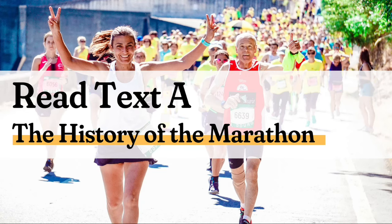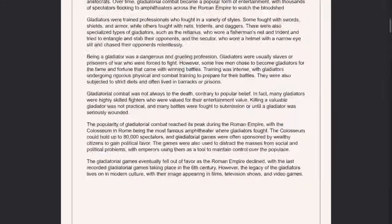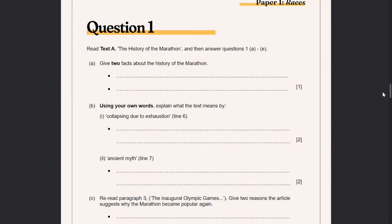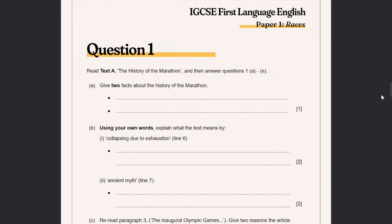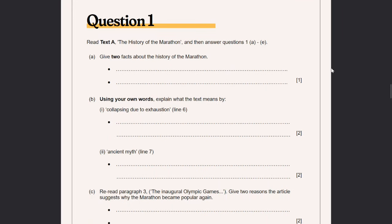Now we are going to read Text A, which is called 'The History of the Marathon.' Remember my advice: look at the questions first. You can download this document — the link is in the description, it's free on my website. Here are the questions — just have a quick read through.